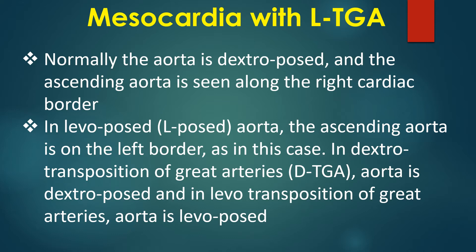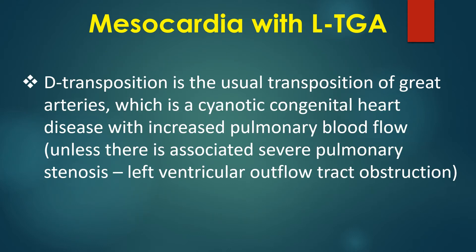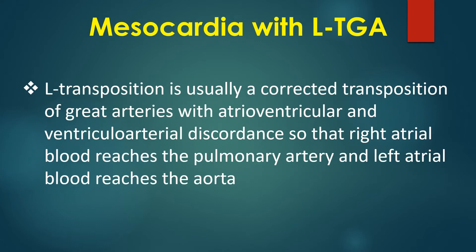In levoposed aorta, the ascending aorta is on the left border, as in this case. In dextrotransposition of great arteries, the aorta is dextroposed, and in levotransposition of great arteries, the aorta is levoposed. D-transposition is the usual transposition of great arteries, which is a cyanotic congenital heart disease with increased pulmonary blood flow unless there is associated severe pulmonary stenosis or left ventricular outflow tract obstruction. L-transposition is usually a corrected transposition of great arteries with atrioventricular and ventricular arterial discordance, so that right atrial blood reaches the pulmonary artery and left atrial blood reaches the aorta.